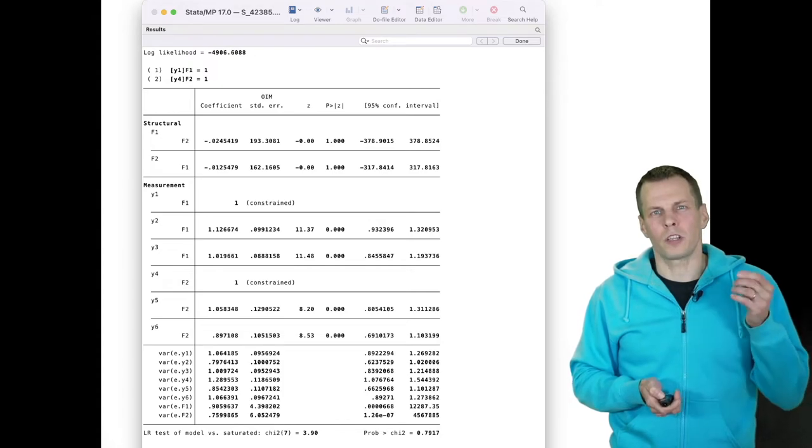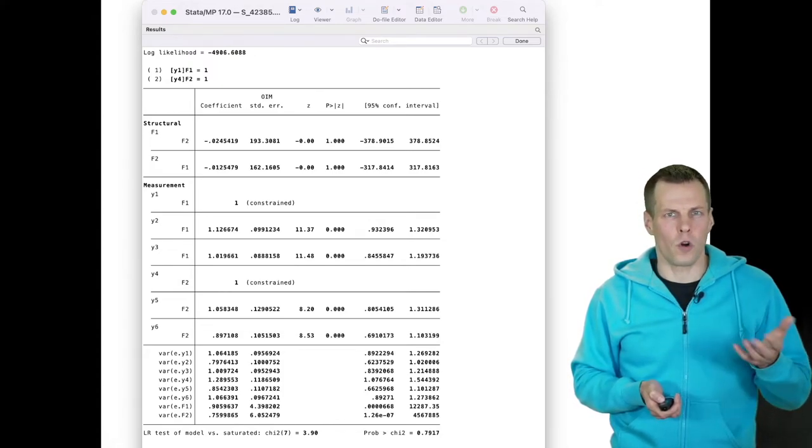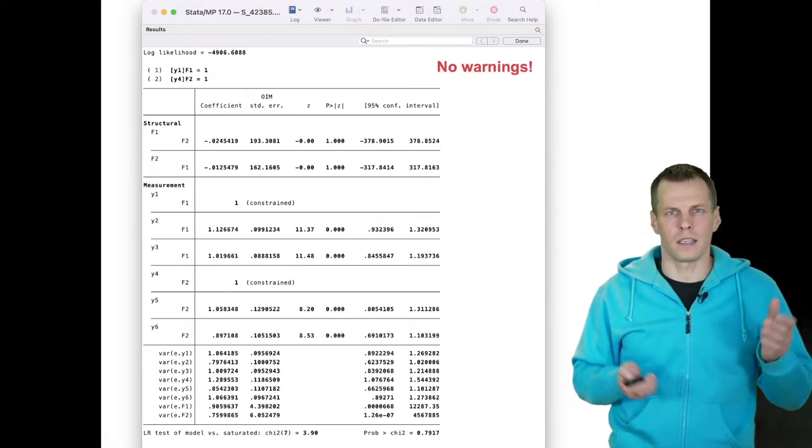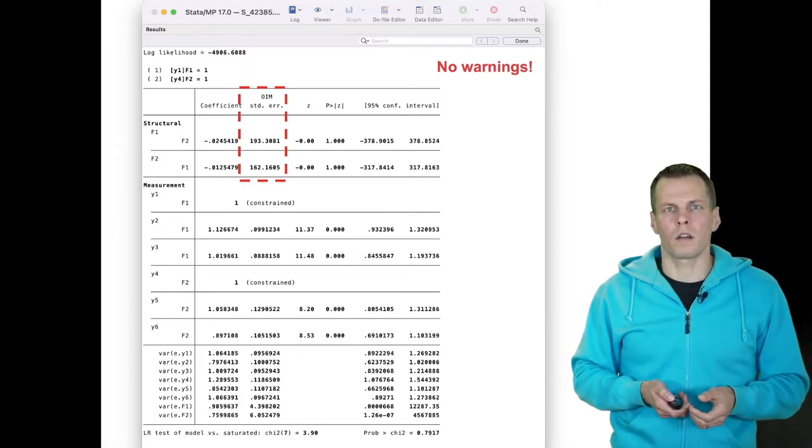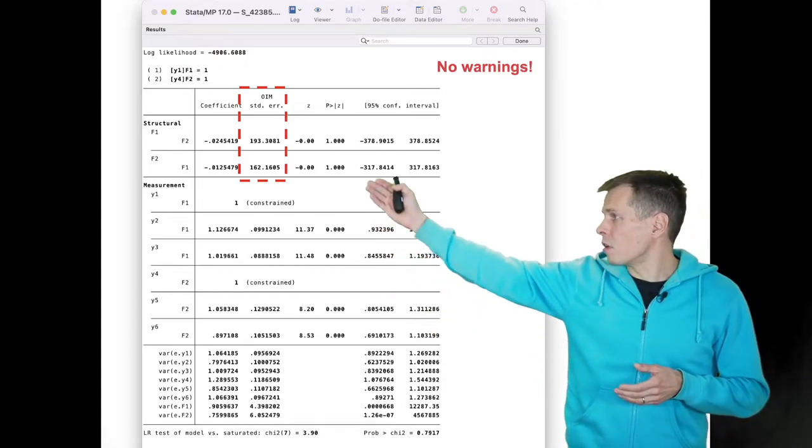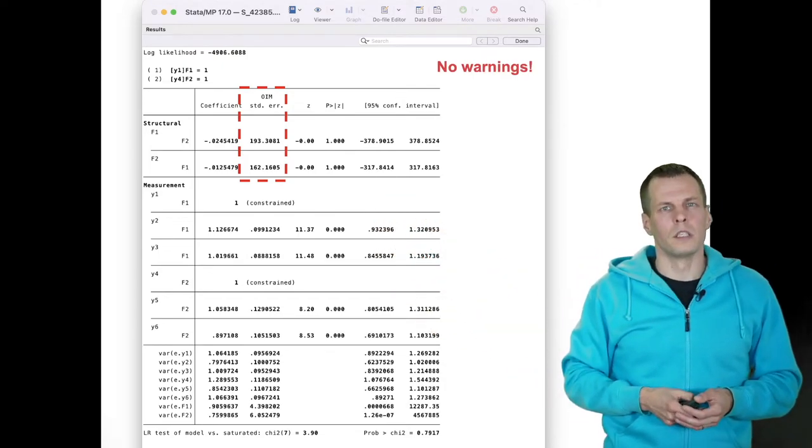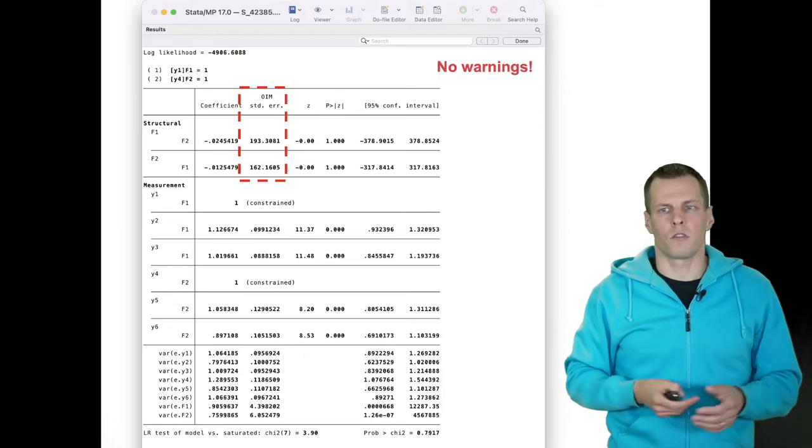Interestingly, one of the checks for identification is warnings. We get none. So these checks are not bulletproof. We do get large standard errors, which indicates a potential identification issue with the model. But it doesn't really tell us the nature of the identification issue.